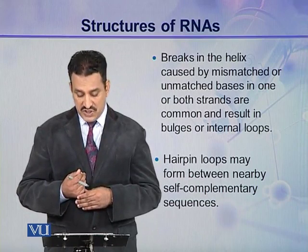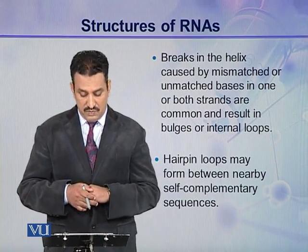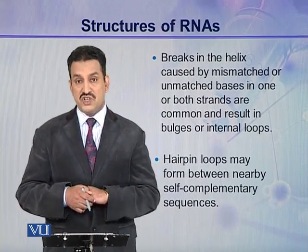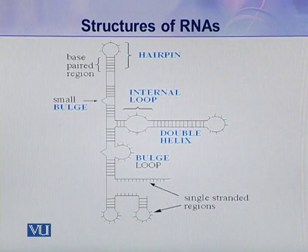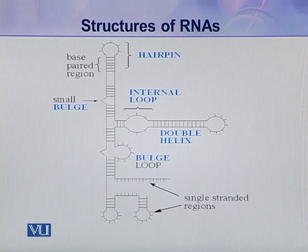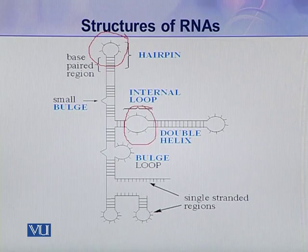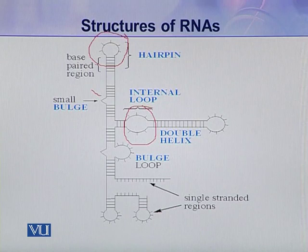In an RNA molecule, there are complementary regions but also breaks where one strand is not complementary to the other — at these points, either a bulge or a loop is formed. Another type of loop called a hairpin loop may form between nearby self-complementary sequences. In this illustration, you can see a number of secondary structures assumed by ribonucleic acids: a hairpin loop, an internal loop, and a small bulge where only one or two bases are not complementary to each other.